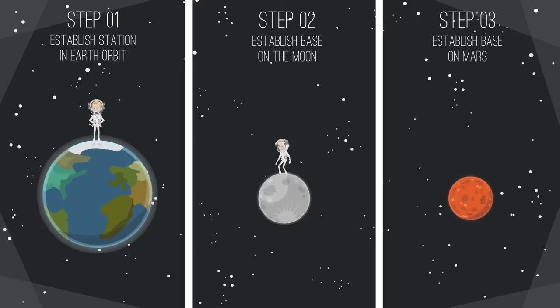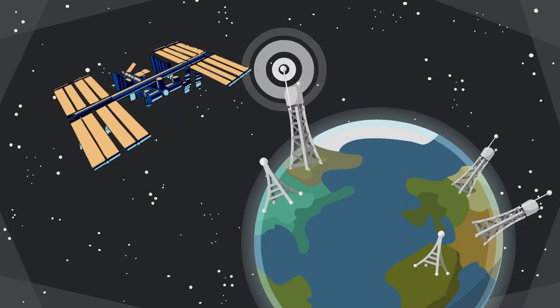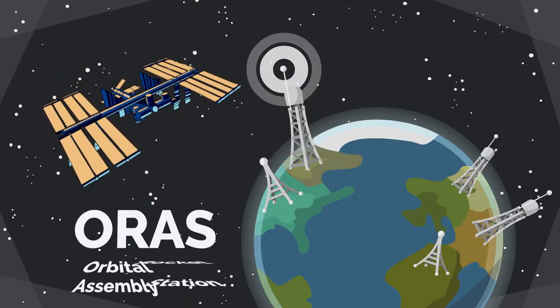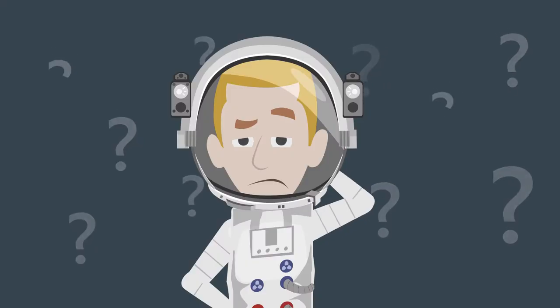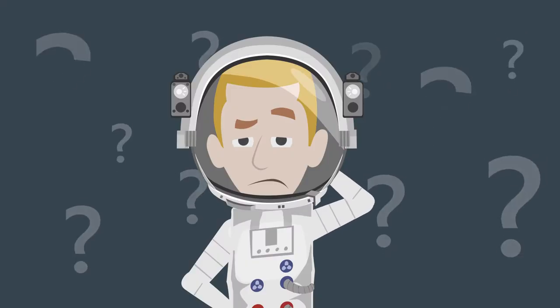The plan is to get to Mars in three steps. Sounds easy enough. They finished the first step last year, completing the Orbital Rocket Assembly Station, or ORAS. You wonder to yourself why that acronym sounds so familiar.